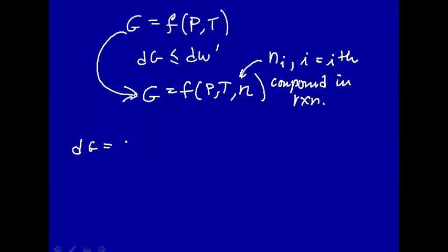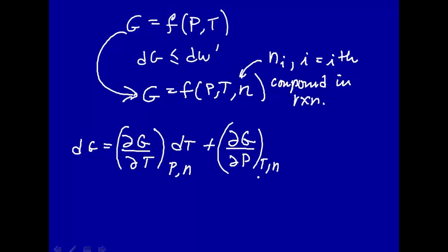dG now is how G... let's do temperature first... at constant pressure and number of moles, because we have three variables, times dT, plus how G changes with pressure at constant temperature and number of moles, at constant temperature and pressure, times change in number of moles.